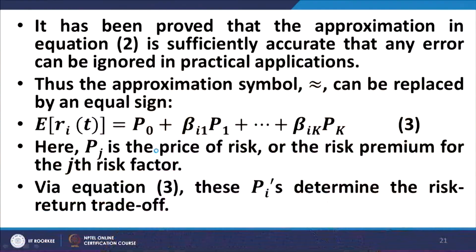What are these p_j values? They are the price of risk. Just as in the CAPM there was one equity risk premium multiplied by one beta, in the APT the entire set of betas representing the risk exposure profile is multiplied by the corresponding risk prices p_j. The approximation has been shown to hold substantially and may be replaced by an equality sign.